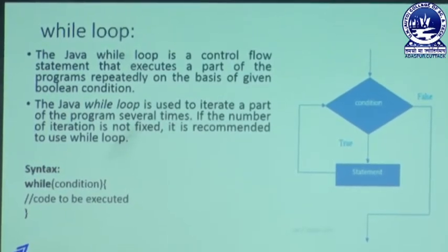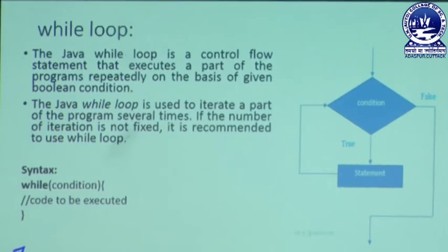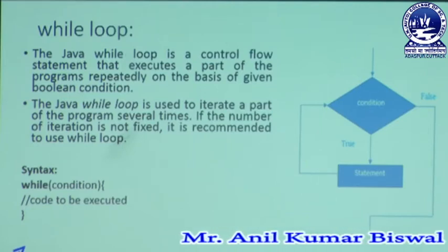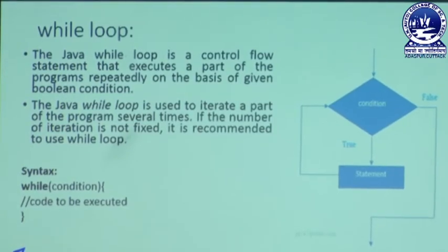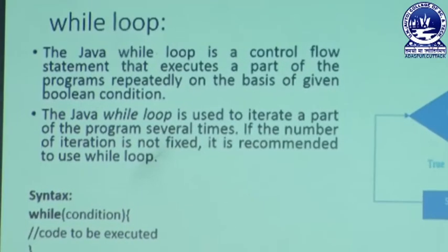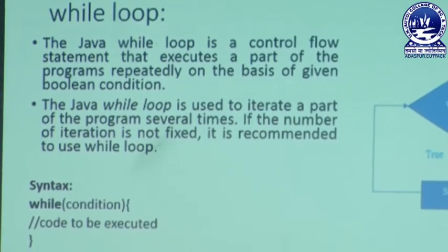Let us focus on the definition of while-loop. The Java while-loop is a control flow statement that executes a part of the program repeatedly on the basis of a given Boolean condition. We need to execute and manage the flow control of statements — it needs to execute repeatedly in our program whenever you get a Boolean condition. Boolean conditions mean it may be true or false. The Java while-loop is used to iterate a part of the program several times if the number of iterations is not fixed.